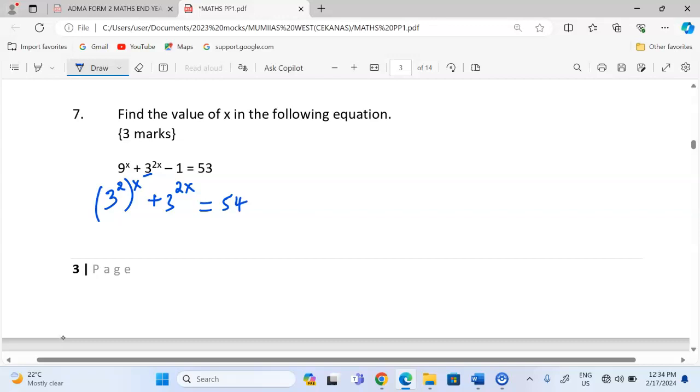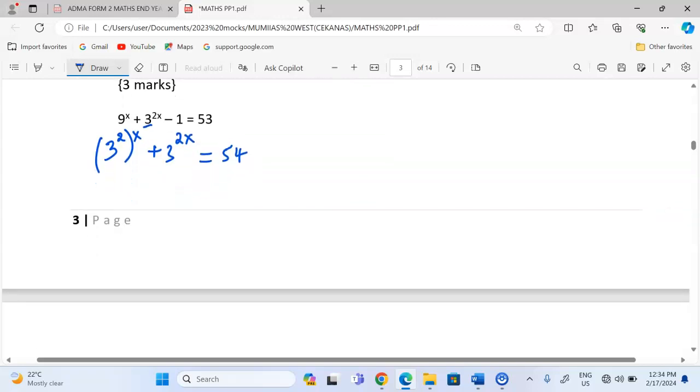Now, according to the product law of indices, we should know that when we take 3 power 2 and there is another power here, it just becomes 2x plus 3 power 2x. This is equivalent to 54.